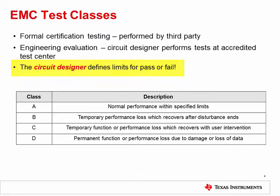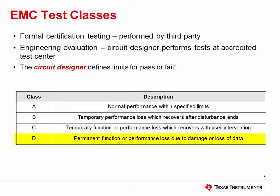A circuit will achieve one out of four classes of performance during the suite of tests. For class A, the circuit performance remains within the specified limits during the test. For class B, the circuit performance temporarily falls outside the limits, but recovers on its own after the test ends. For class C, the circuit performance falls outside the limits, but recovers after intervention, such as a power cycle or register rewrite. For class D, the circuit performance or function fails permanently, either due to hardware damage or loss of data.